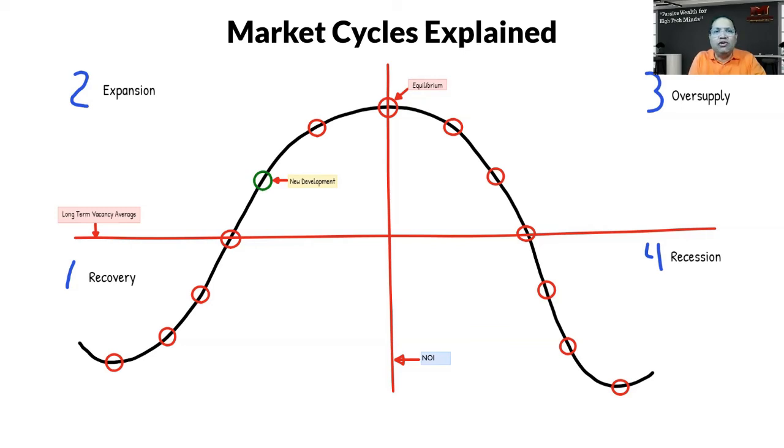These are four different cycles: one is recovery, second is expansion, third is oversupply, and fourth is recession. We have our long-term occupancy average line, our NOI line, our point of equilibrium, and our point of new development.